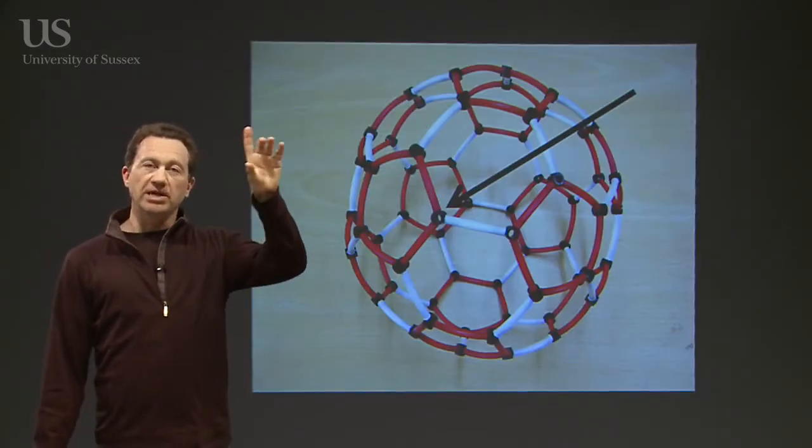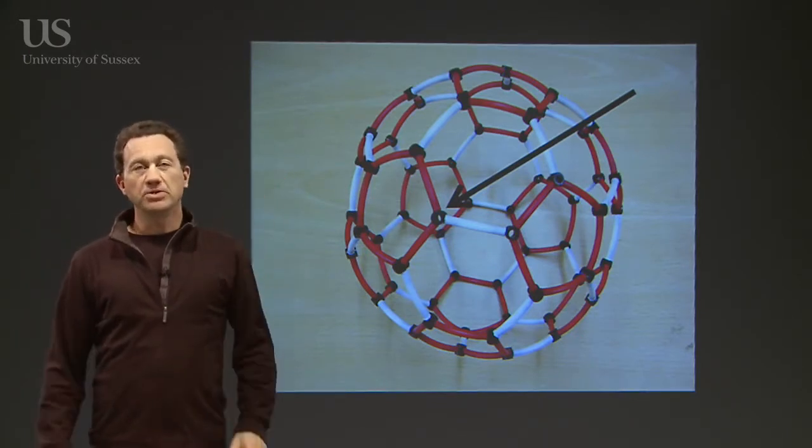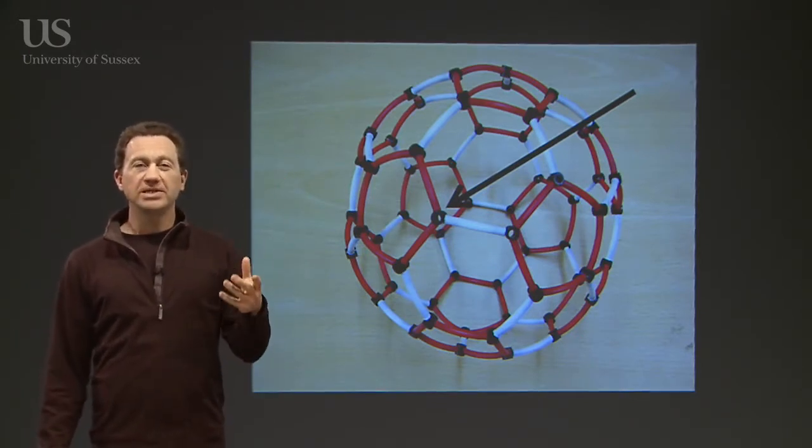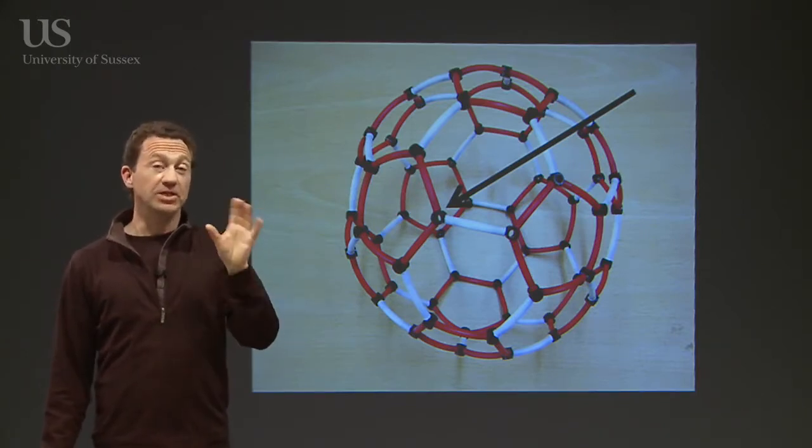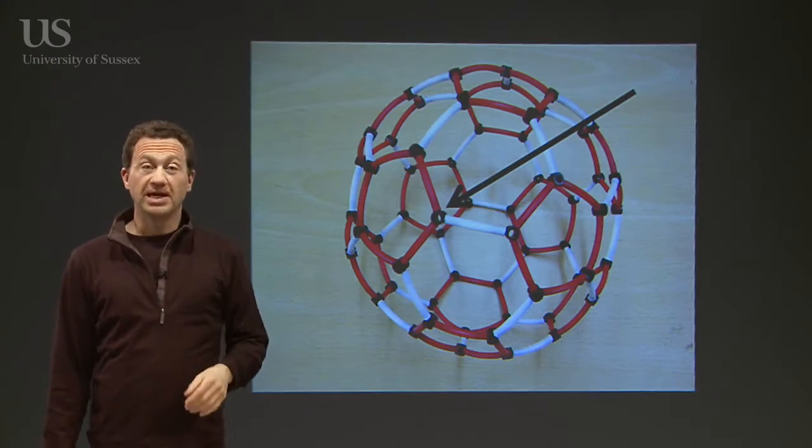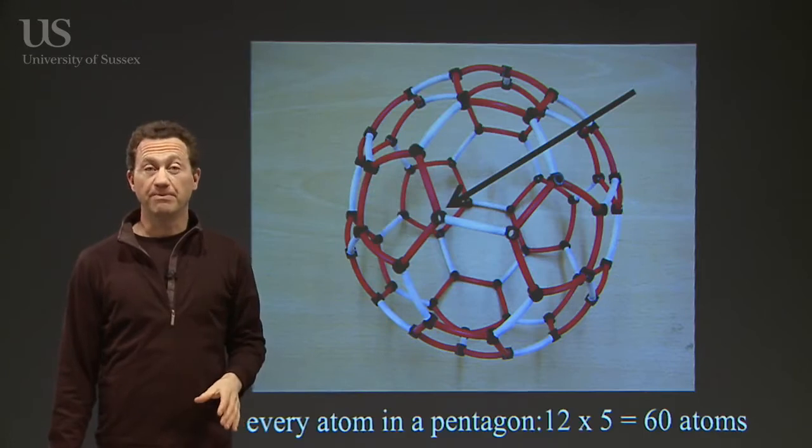Each atom is actually surrounded by three atoms, but carbon has a valency of four - it wants to have four bonds. So how do we sort out this structure of the bonding when you only have three neighbors but you actually want a valency of four? In C60, in the buckminsterfullerene structure, there's a beautiful elegant solution to that problem.